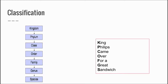In order to classify an organism, we have to define its kingdom, phylum, class, order, family, genus, and species. We can make a mnemonic for them: 'King Philips Came Over For A Great Sandwich' — K for kingdom, P for phylum, C for class, and so on.